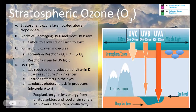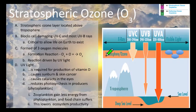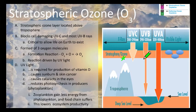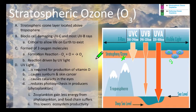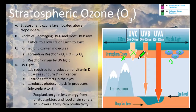Moving on to ozone — a quick reminder of atmospheric structure. We have the troposphere, stratosphere, mesosphere, thermosphere, and exosphere. The troposphere is where we live; the stratosphere is the next layer up and contains the ozone layer. The ozone layer is made of O3 molecules — three oxygen atoms bonded together — and its job is to block UV light, particularly damaging UV light. UVC is completely blocked, which is critical because it allows most life, including producers, to thrive and flourish.